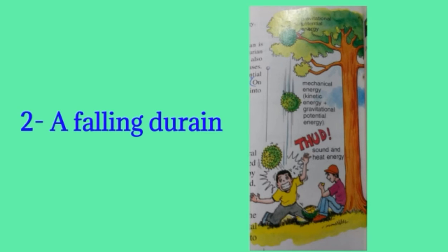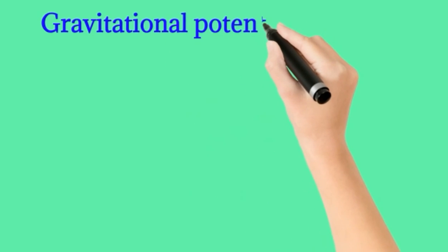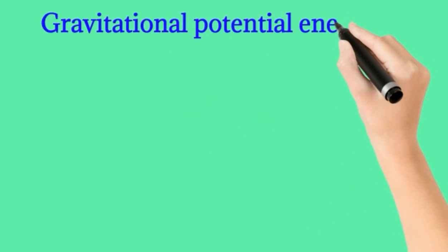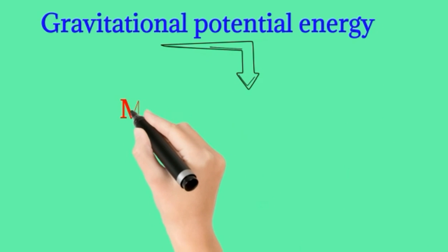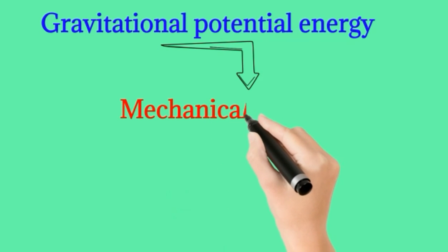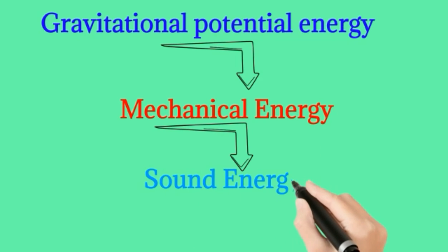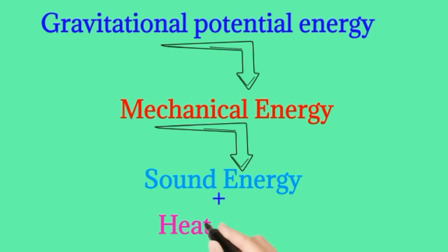On impact with the ground, the kinetic energy is converted into heat energy and sound energy. Here I have drawn a flow sheet diagram to show the energy conversion in a falling durian. The gravitational potential energy is converted into mechanical energy when it is falling, and on hitting the ground its mechanical energy is converted into sound energy plus heat energy.